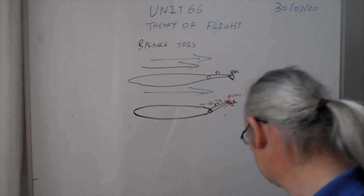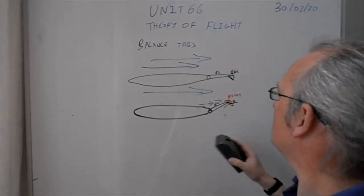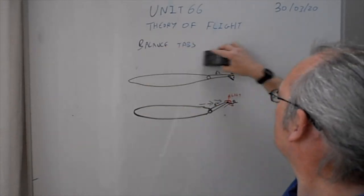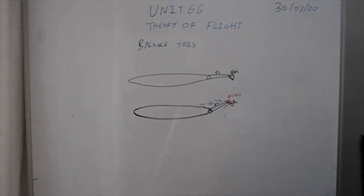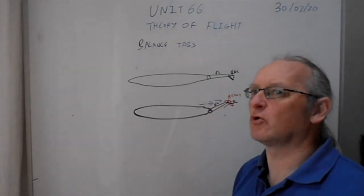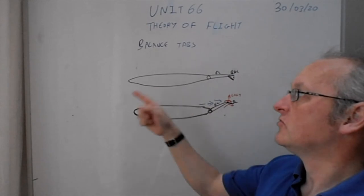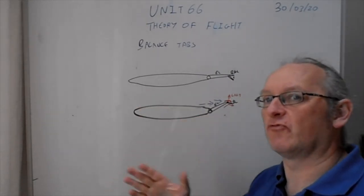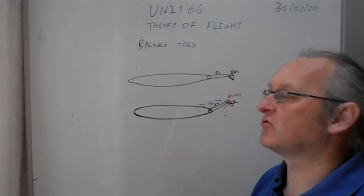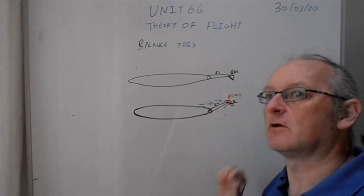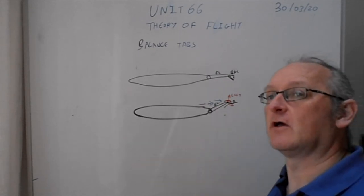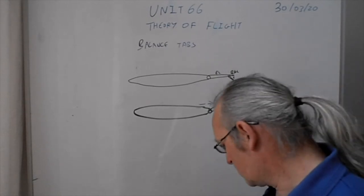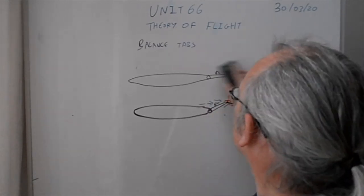For merit-quality work, what I'm looking for is the difference between trim and balance tabs, and both the aerodynamic and mechanical operation of each system. Aerodynamic operation means how and why it modifies lift. Mechanical operation means how it achieves that physically. Balance tabs operate automatically.